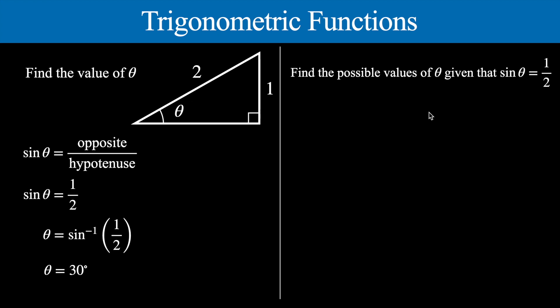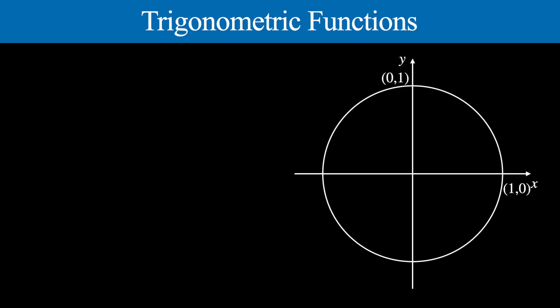Before I answer this question let's take a quick look at the unit circle to understand where these solutions come from. Here we have the unit circle — it's a unit circle because the radius is one. The circle intersects the y-axis at (0, 1) and the x-axis at (1, 0). We could draw a right triangle in here: the hypotenuse will be one, and we have some angle theta between the x-axis and the hypotenuse. We're going to think about the coordinates of the point where the radius intersects the circle.